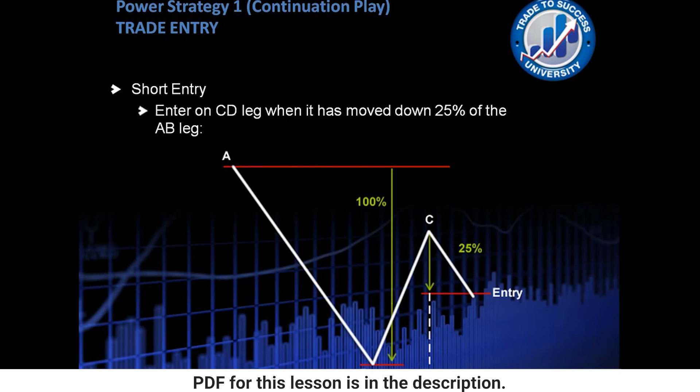Now obviously that 25% will obviously vary depending on what the move from A to B is. The ratio of 25% is obviously always going to be the same, but what I mean here is that 25%, however many pips that is, depends on what the move from A to B is.